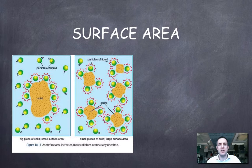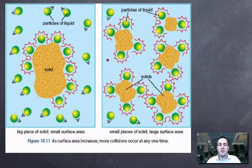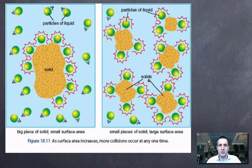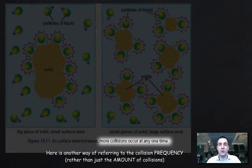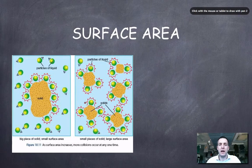Changing the surface area also affects how often particles collide, but doesn't affect the energy of their collisions. Looking at two diagrams showing the same mass of solid — so the same number of particles overall — the chances of a green particle colliding with a solid particle are smaller when you have large chunks, because the surface area isn't as great. If you break a solid into smaller pieces you increase its surface area, meaning there are not more particles overall, but more particles exposed to collisions. So collisions happen more often — not just more collisions, but more frequently.